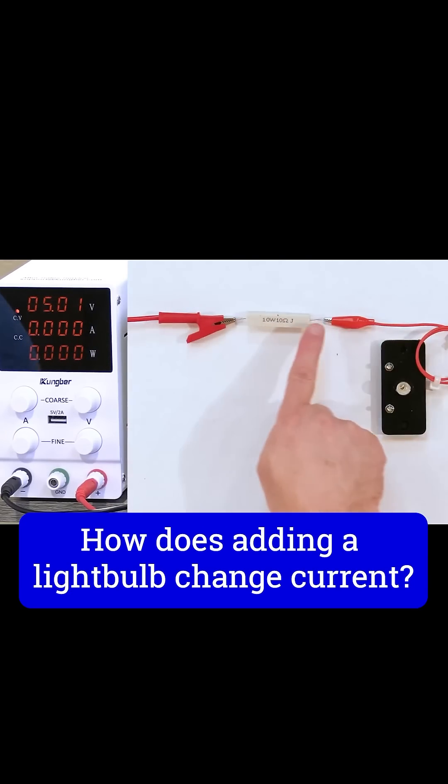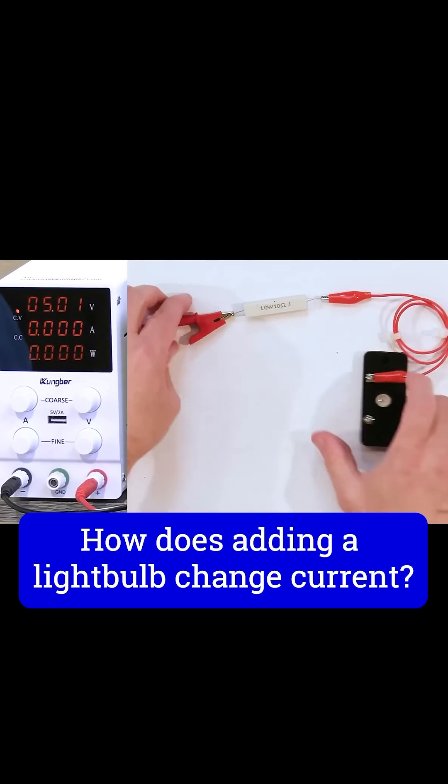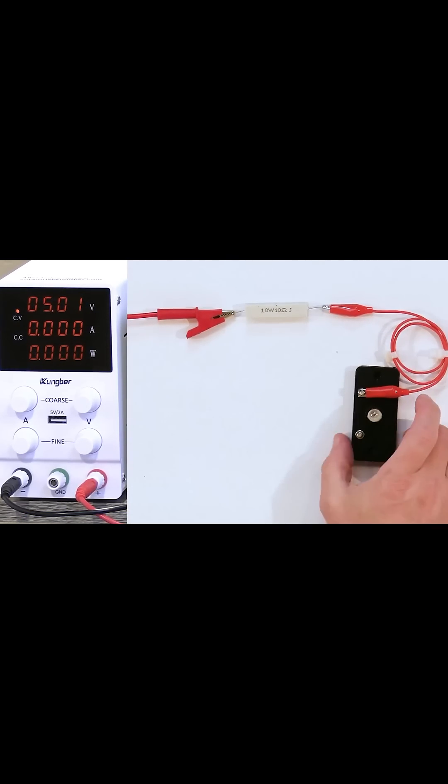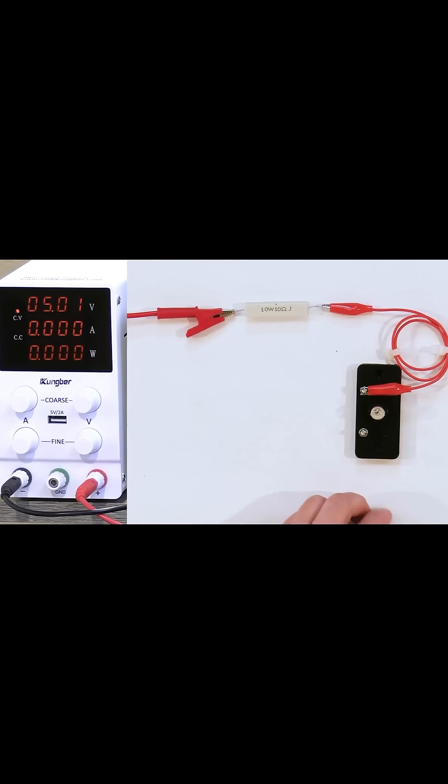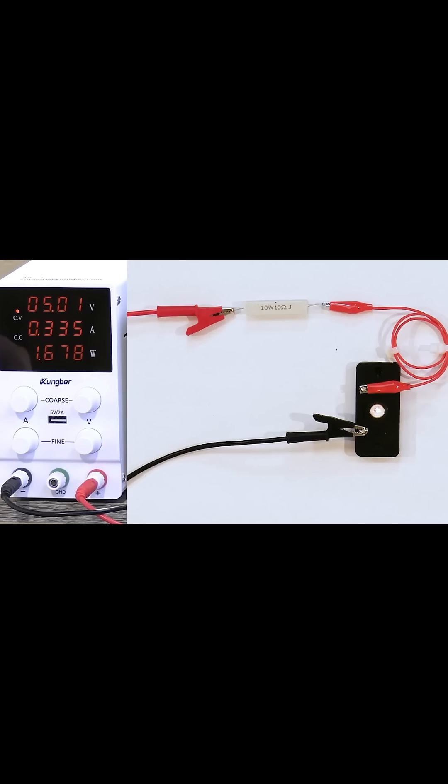So what I'll do is send the electricity through the resistor, but then it immediately goes into the light bulb. I just have a little coil of wire here going into the light bulb, and then it's going to go to the other side right here. And then you can see the light bulb is illuminated.